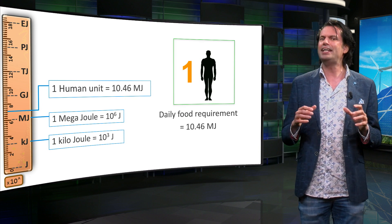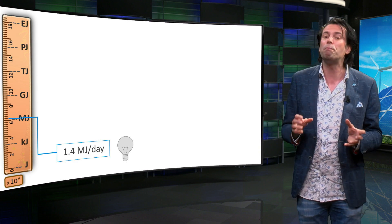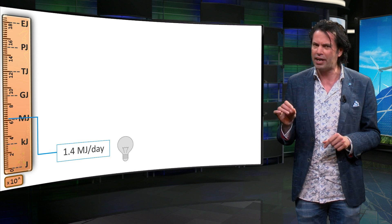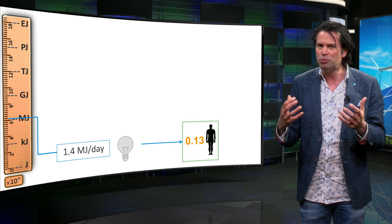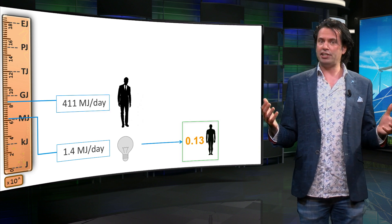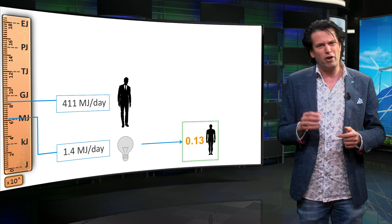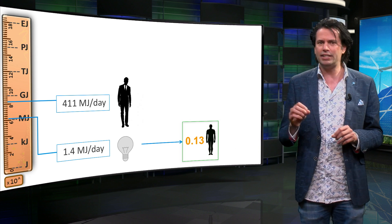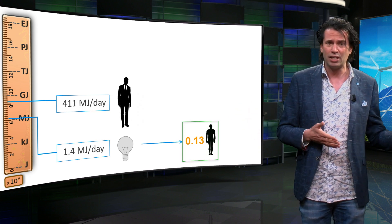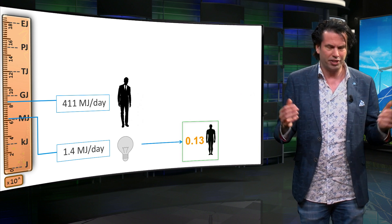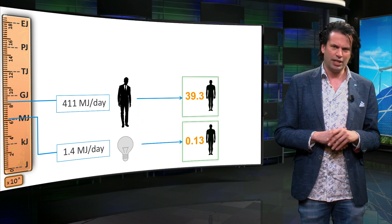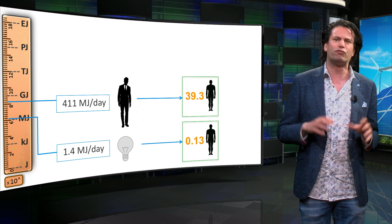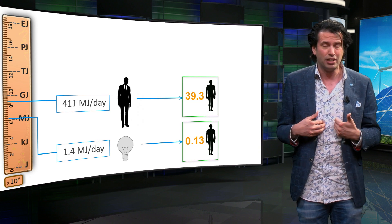Now let us look at the daily energy use that we encounter in our daily lives. For example, a 16 watt lamp requires about 1.4 megajoules of energy if it were kept on for 24 hours. With our new system, this is equal to 0.13 human units. The total energy consumption of an average person living in Europe is about 411 megajoules a day. This includes the energy used for transportation, cooking, heating, lighting, and other daily activities. In human units, this is equal to 39.3 human units.